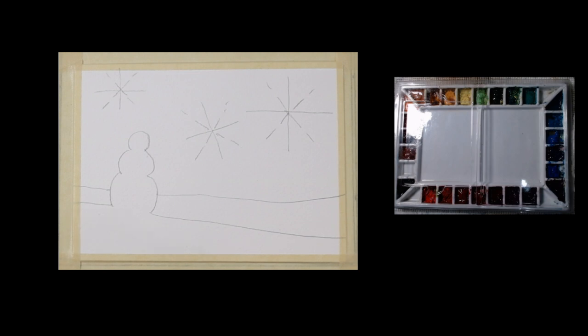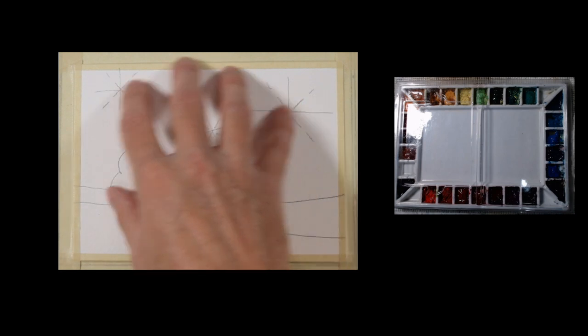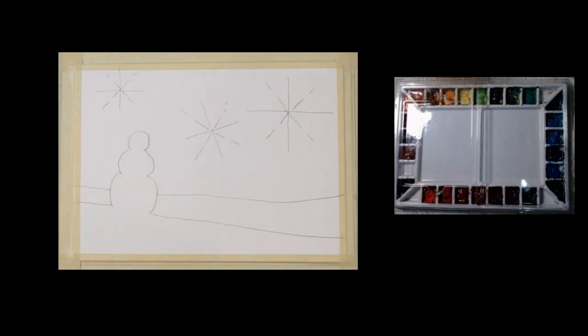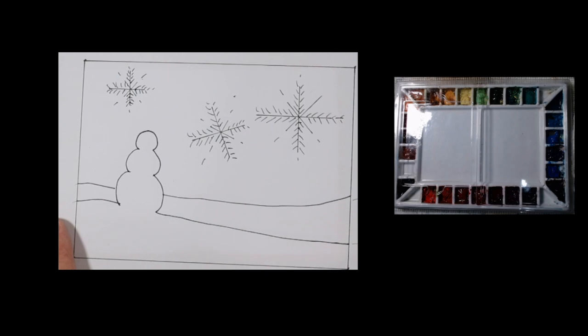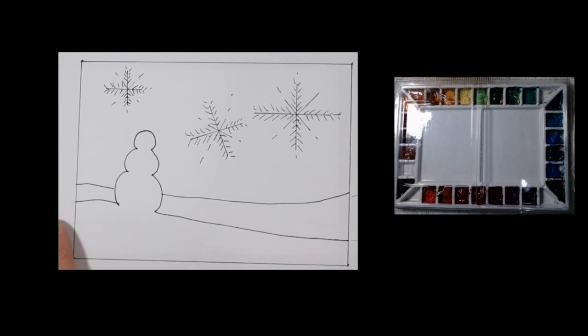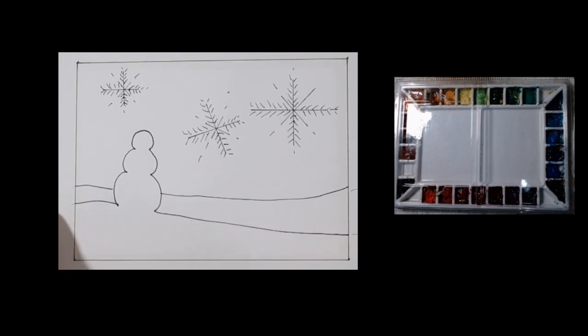We're ready to begin this Christmas card. This is on a 5 by 7 inch blank greeting card made of 140 pound cold press watercolor paper. This is the template for it. You'll find this template in my Learning Center on my website and it's on the project page. So go to the Learning Center page, click on the project at the top.